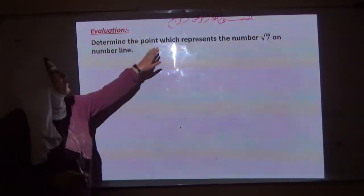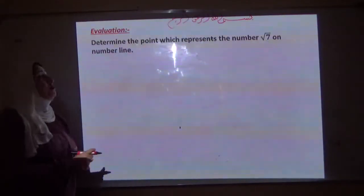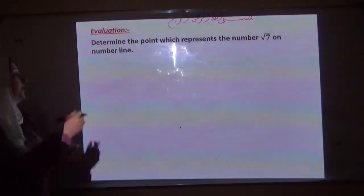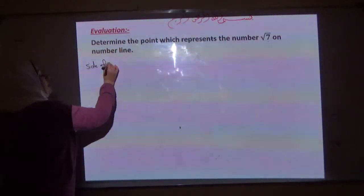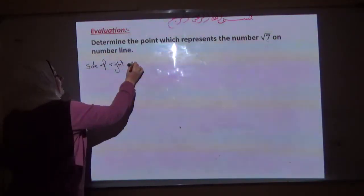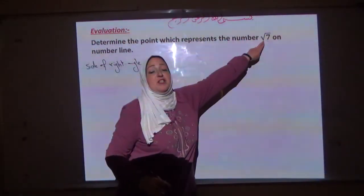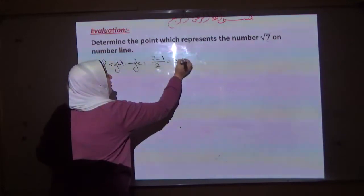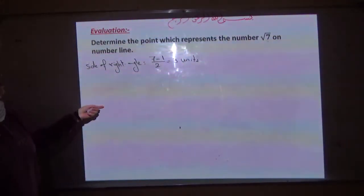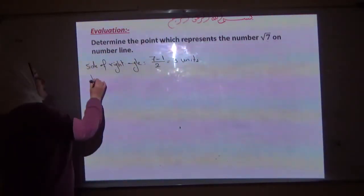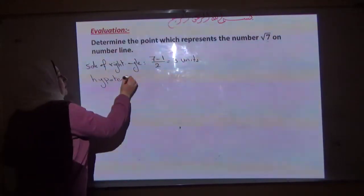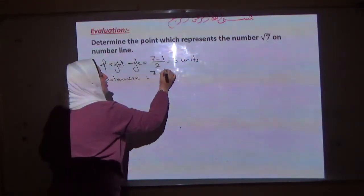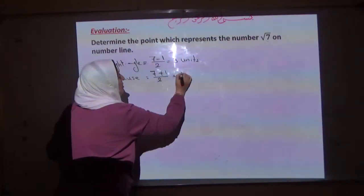Evaluation: determine the point which represents the number square root 7 on the number line. First, define the two sides of the right-angled triangle. The side of the right angle equals the number minus 1 divided by 2: 7 minus 1 over 2 equals 3 units. The hypotenuse equals the number plus 1 divided by 2: 7 plus 1 divided by 2 equals 4 units.